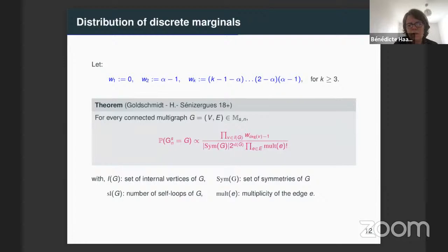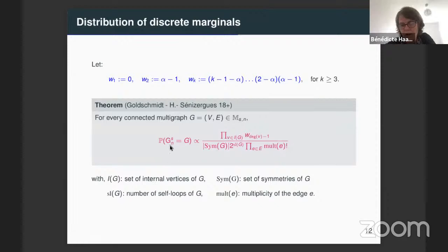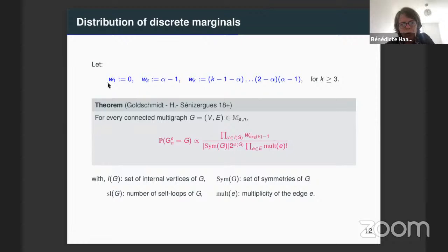This is our first result. For any connected multigraph in this set M_S^N, the distribution of the N-th marginal with surplus S is given by a formula: it is proportional to a quotient. The numerator is given by a product of weights W, indexed by the internal vertices of the graph. Then we divide this product of weights by some quantities.